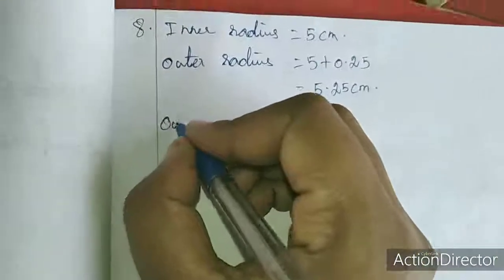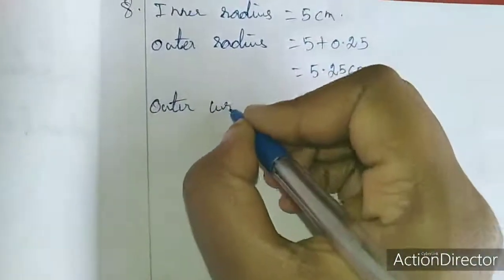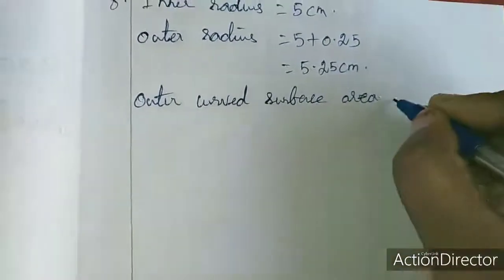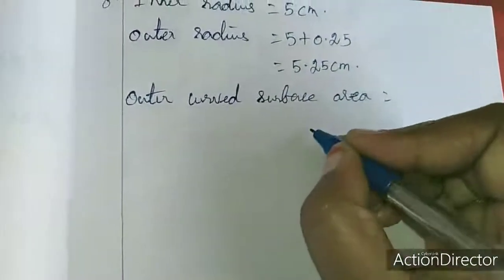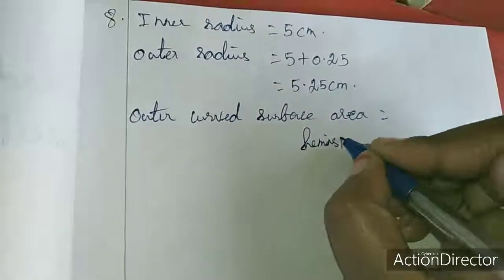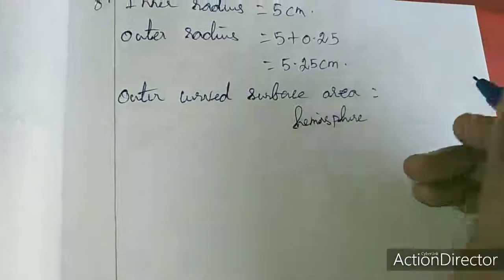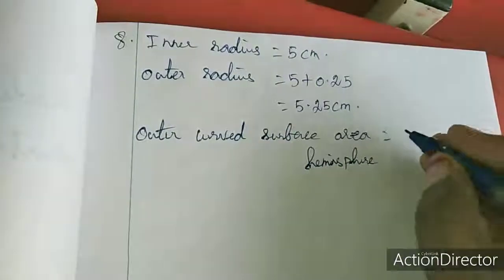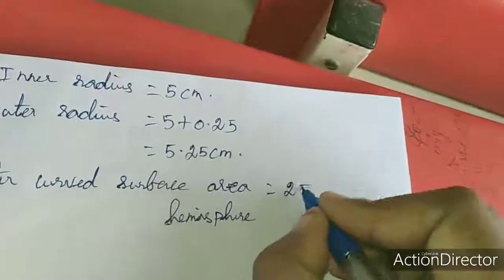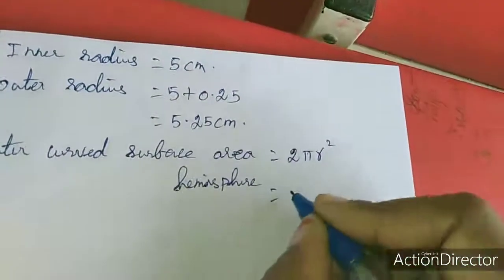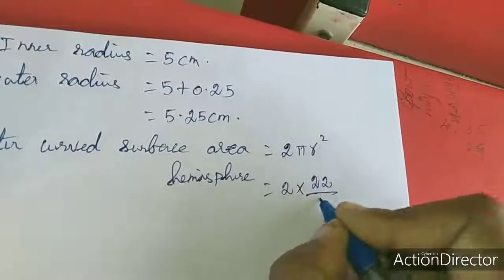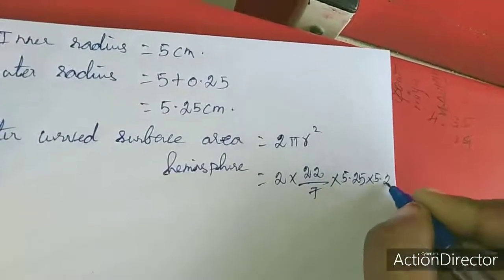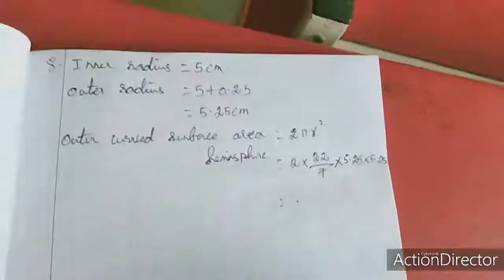We need to find the outer curved surface area. The curved surface area of a hemisphere is 2πr². So, outer curved surface area = 2 × (22/7) × 5.25 × 5.25. Simplifying this gives us the answer.